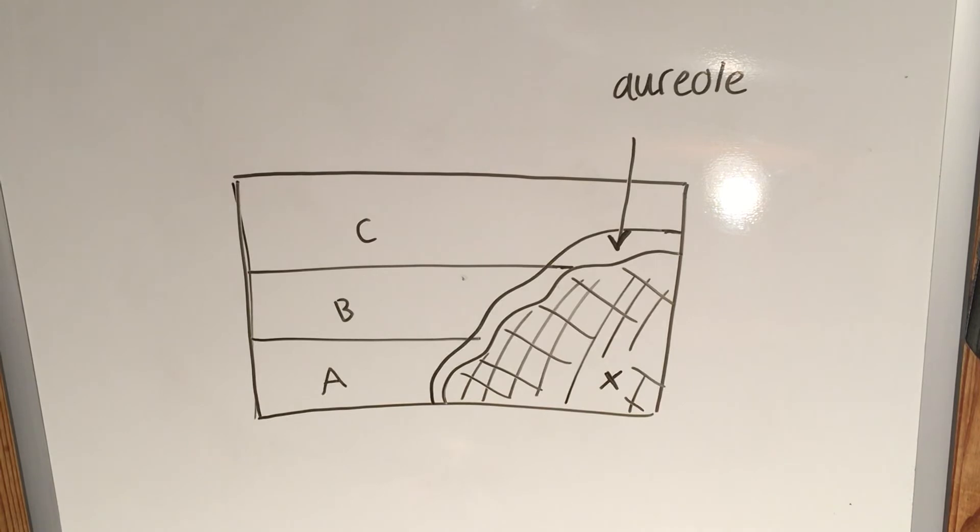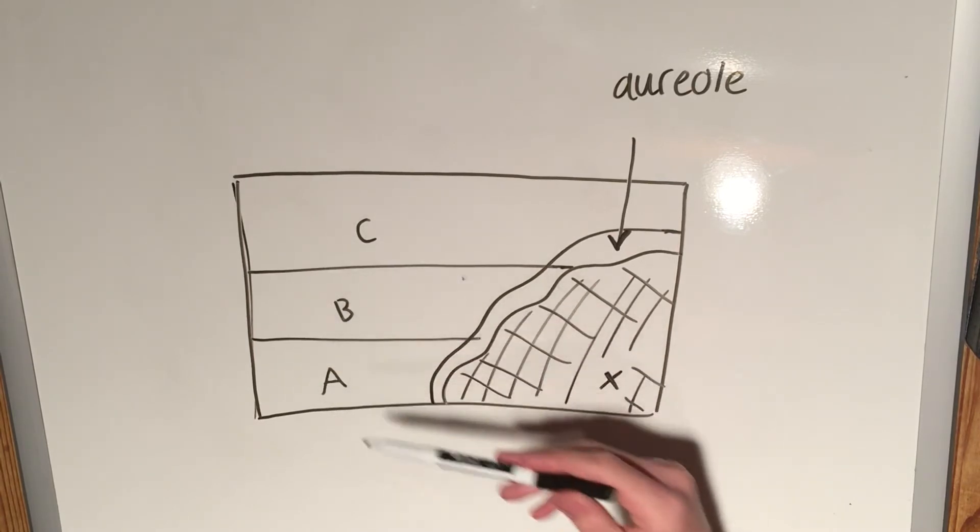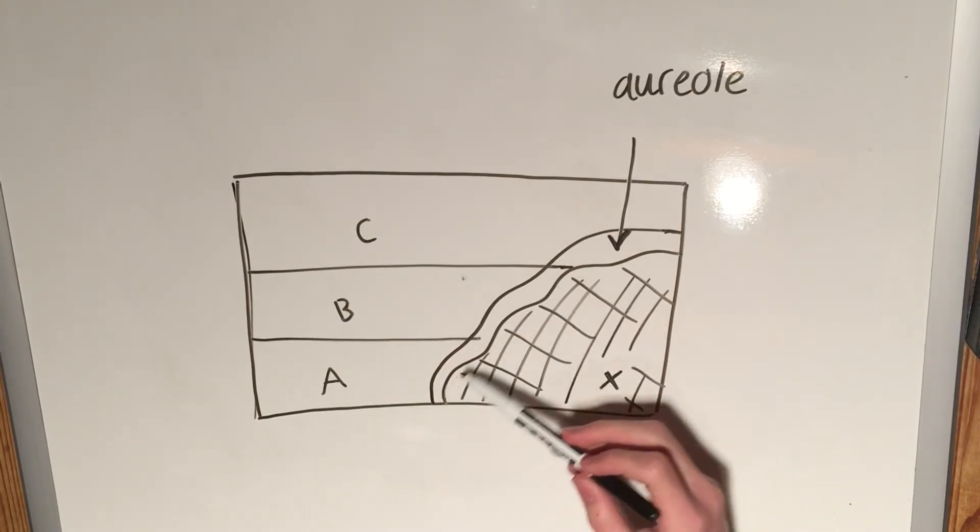So contact or thermal metamorphism is simply when you have an intrusive body that can be a batholith or in some cases a dike or a sill, although those are much smaller and thus supply much less heat. It's when you'll have something like that that intrudes upon sedimentary strata and will then create a small layer.